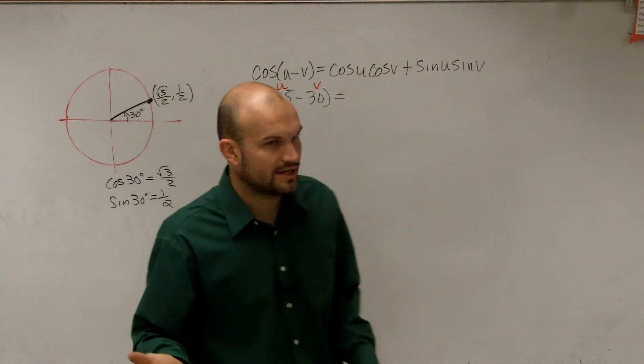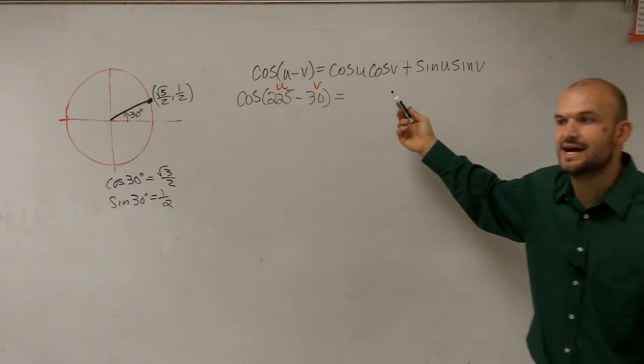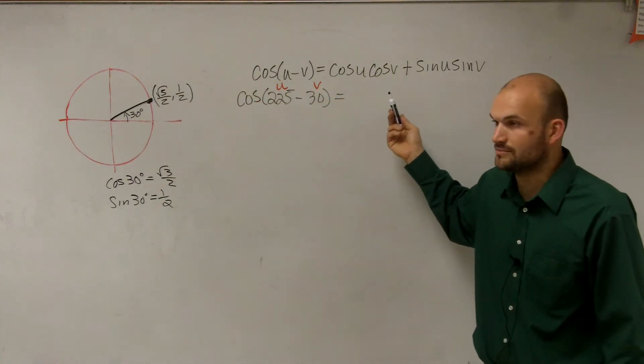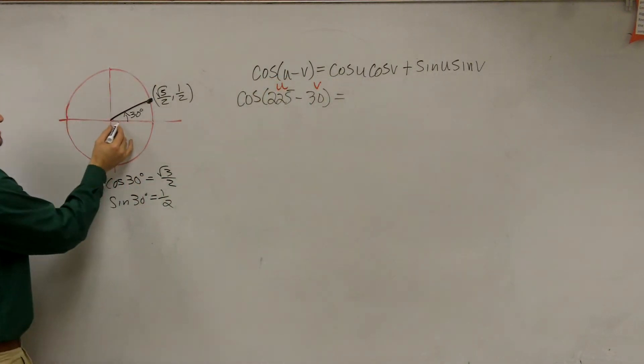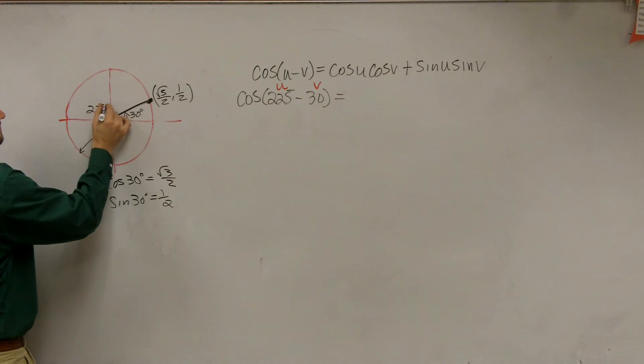So I've just evaluated, because you notice in the formula, you have to figure out what cosine and sine are for both of the problems, right? Now let's go look at 225 degrees. Well, 225 degrees is going to be over 180 plus 45 degrees. So that is 225 degrees.